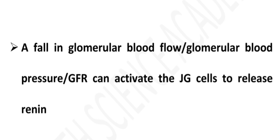A fall in glomerular blood flow, glomerular blood pressure, or GFR can activate the JG cells to release Renin. So Renin is also an incorrect option.